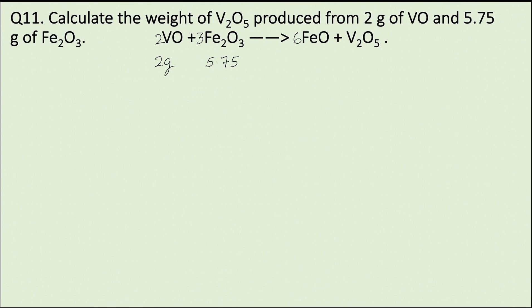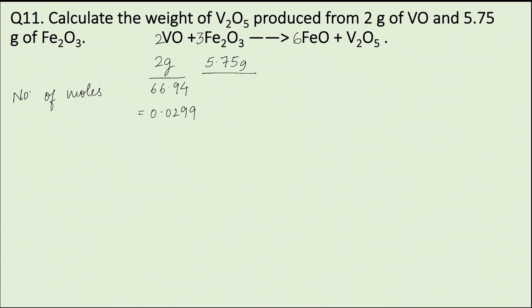The first step is to find the number of moles. To find the number of moles we will divide weight by molecular weight. Number of moles of VO will be 2g divided by its molecular weight, that is 66.94, which equals 0.0299 moles. Moles of Fe2O3 will be 5.75g divided by its molecular weight, 159.7g, which equals 0.036 moles.